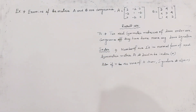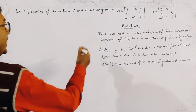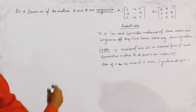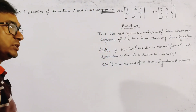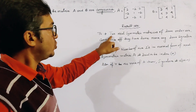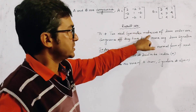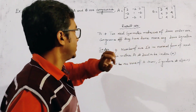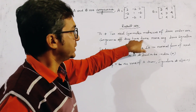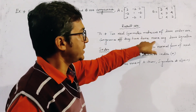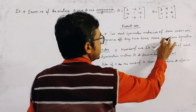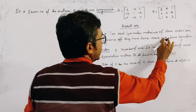To prove whether A and B are congruent or not, we use an important theorem of matrices. The theorem states: two real symmetric matrices of the same order are congruent if and only if they have the same rank and the same signature.